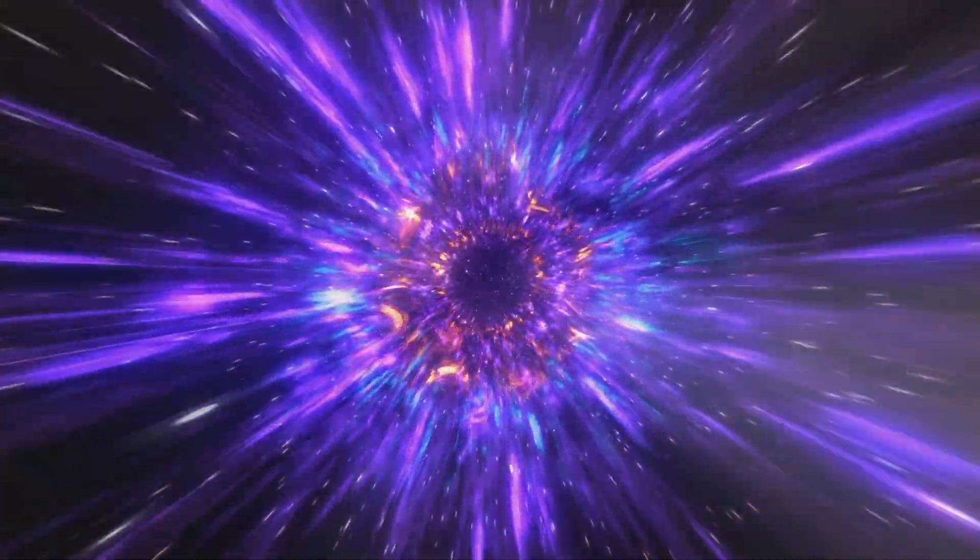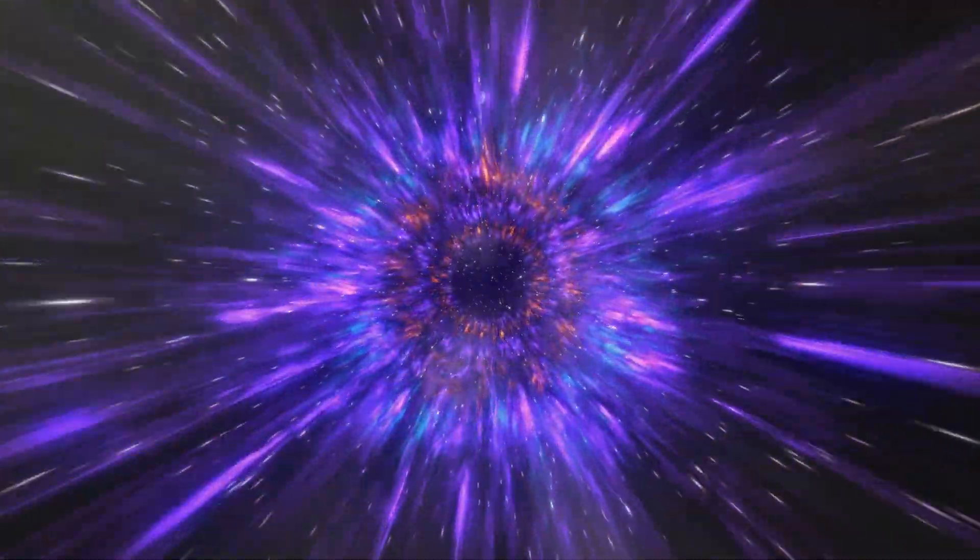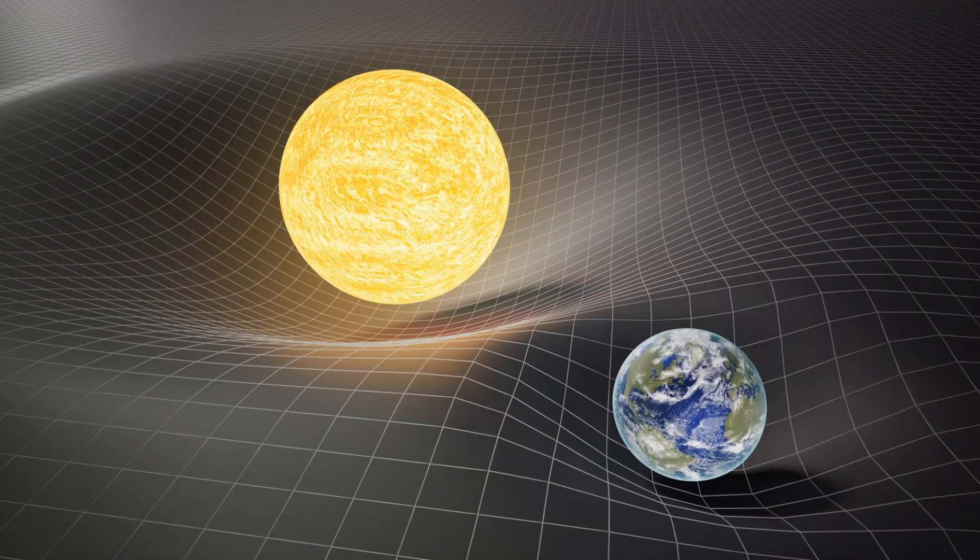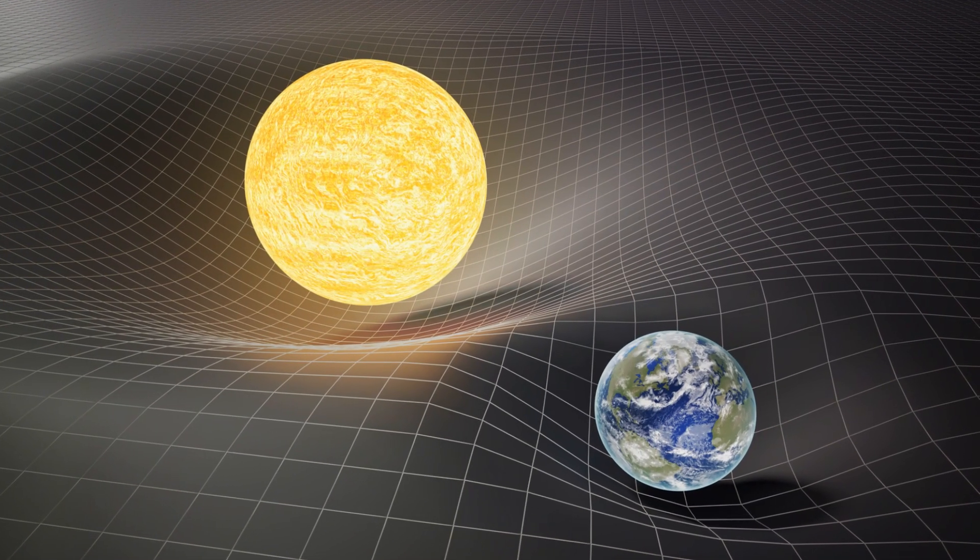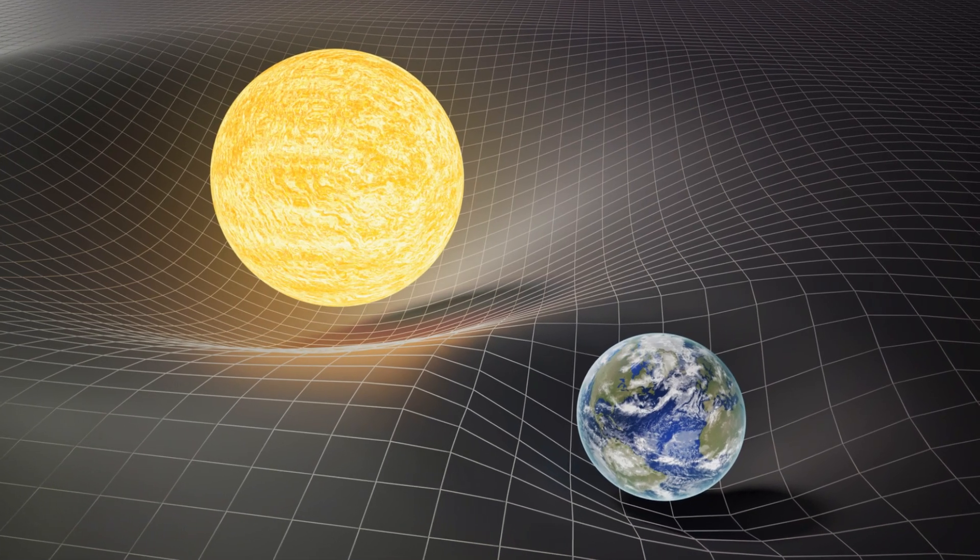Imagine a trampoline where the fabric represents the space-time continuum, and any object placed on it, say a bowling ball, distorts the fabric, creating a sort of dimple or curvature. That's what happens when a mass, like a planet or a star, sits in space-time. It distorts the fabric around it, and this curvature, Einstein proposed, is what we perceive as gravity.